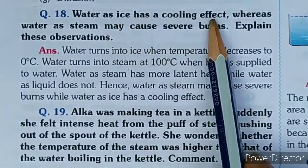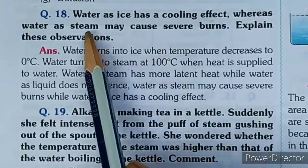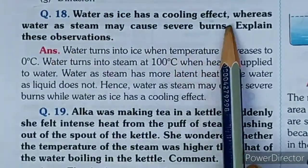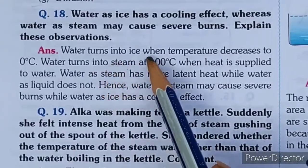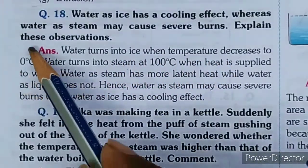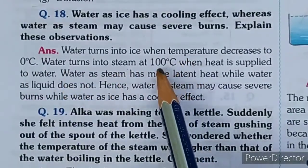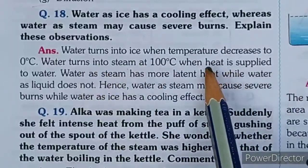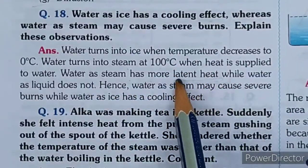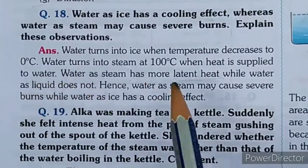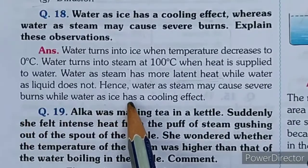Question 18: Water as ice has a cooling effect whereas water as steam causes severe burns - explain this observation. Water turns into ice at 0 degrees centigrade and into steam at 100 degrees centigrade. Steam has more latent heat than water in liquid form, hence water as steam causes severe burns while water as ice has a cooling effect.